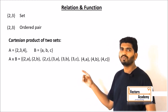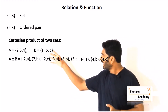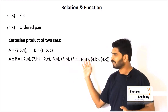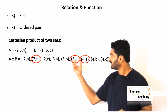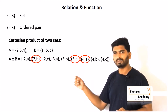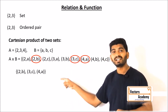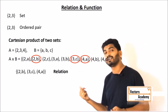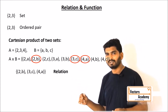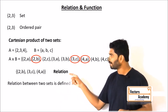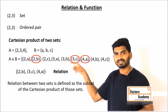Now we'll move on to what is the relation between two sets. If I take any number of elements from this Cartesian product and make another set, that set is called a relation between A and B. So a relation is a subset of the Cartesian product of two sets.